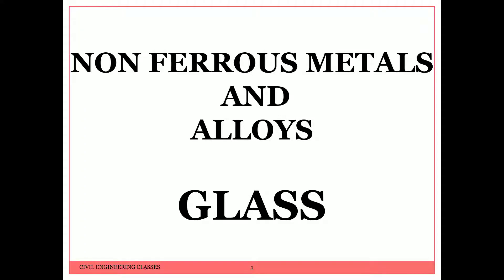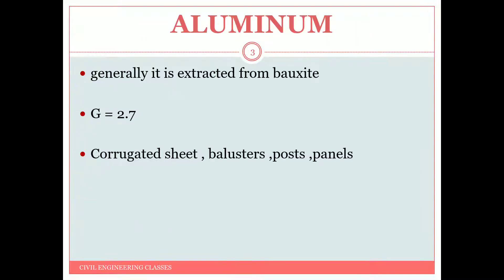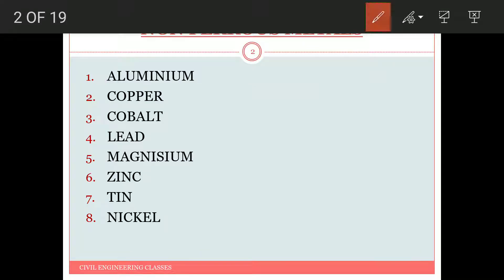Hello everyone, welcome back to Civil Engineering Classes YouTube channel. In the last videos we have been discussing about different ferrous metals. In this video we will see a brief about the non-ferrous metals and their alloys. Non-ferrous metals are metals that do not have iron or have a very insignificant amount of iron in them. Examples include aluminium, copper, cobalt, lead, magnesium, zinc, tin, and nickel.